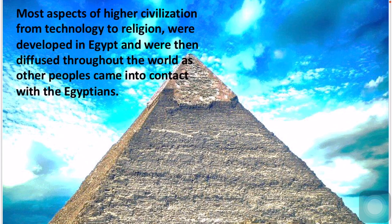Smith and Perry were specialists in Egyptian culture and had carried out research in Egyptology for a number of years. They stated that most aspects of higher civilization, from technology to religion, were developed in Egypt, which was relatively advanced because of its early development of agriculture, and were then diffused throughout the world as other peoples came into contact with the Egyptians. Therefore, primitive cultural forms were no more than degenerated forms of the original Egyptian civilization.